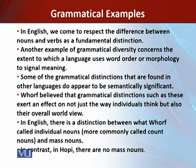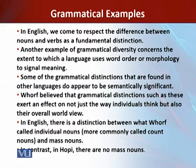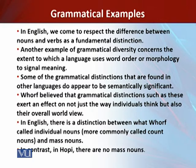Another example of grammatical diversity concerns the extent to which a language uses words or morphology to signal meaning. In English, the vast majority of sentences use subject-verb-object order, and in most cases the first noun is the agent and the second the patient. This order is adhered to rather rigidly in English. If the verb is intransitive — one that does not take an object — the sequence remains subject-verb. When the first noun is deleted, it is very often replaced by a pronoun. Other languages allow deletion of the subject more often, which for a speaker of English may seem unnatural as it violates subject-verb-object order.